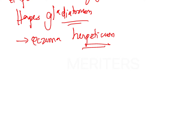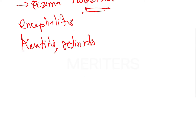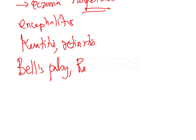In the CNS, it causes encephalitis, which is most common in children, and viral meningitis. In the eye, it causes keratitis and retinitis. In the nerve, it causes Bell's palsy, involving cranial nerve 7.